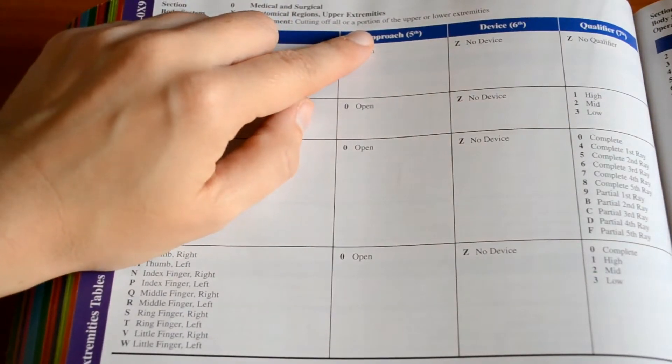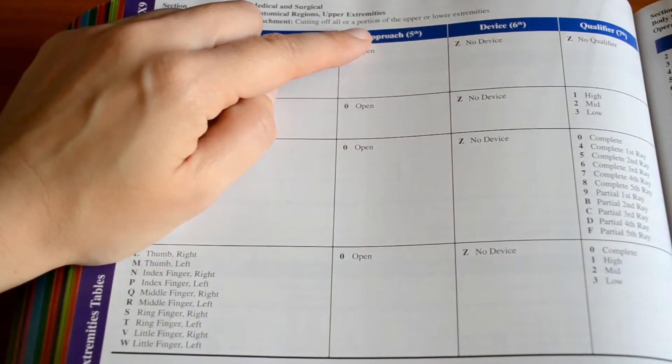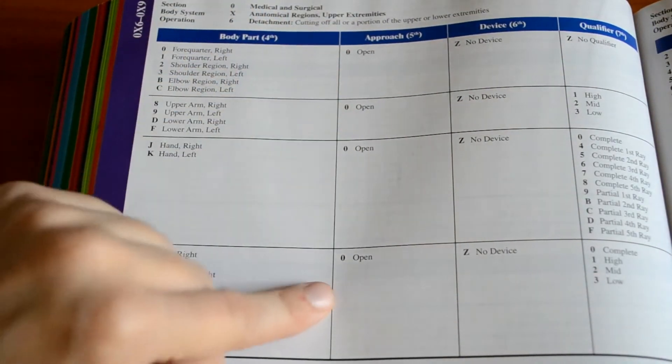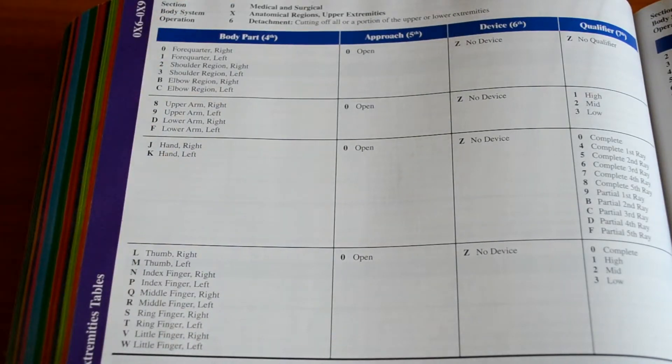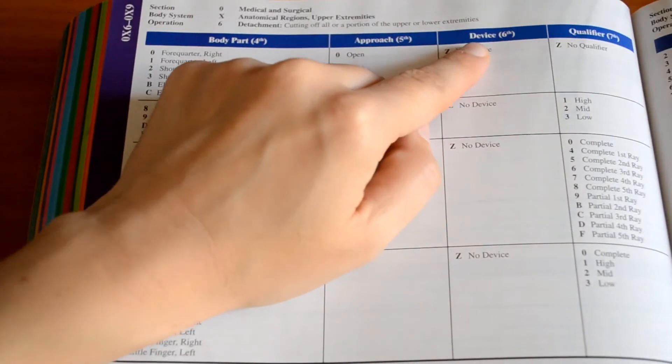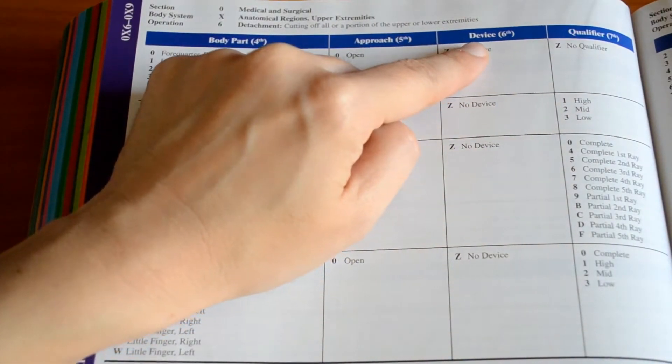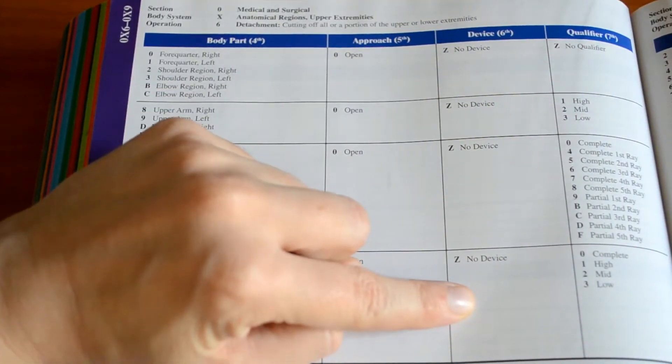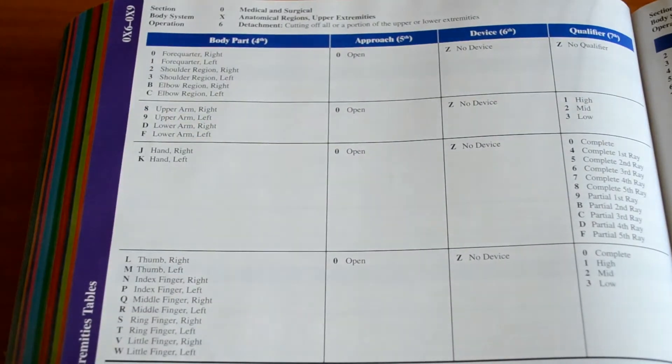Then we want to go to our approach, which is our fifth character placement. The only option you're given is open. So we are going to put an O for open. Then to our device character, which is our sixth character placement. There are no devices involved or offered in detachment, so we put a Z.